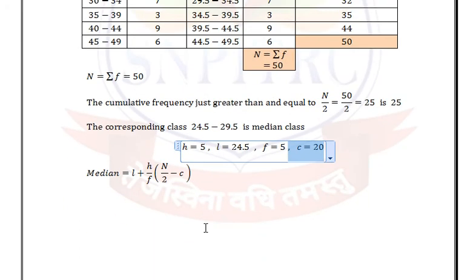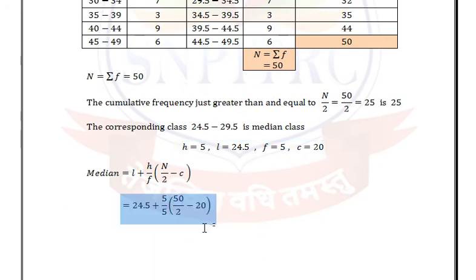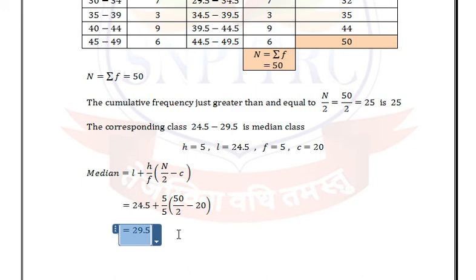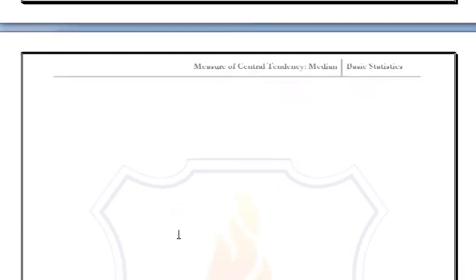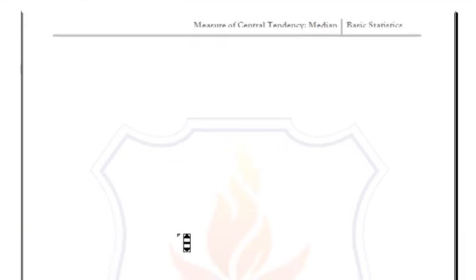Substitute all values into the formula and simplify. The median is 29.5.